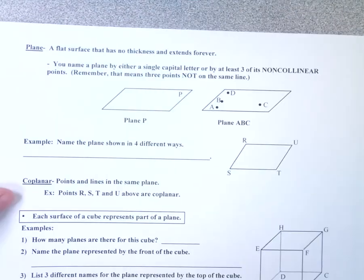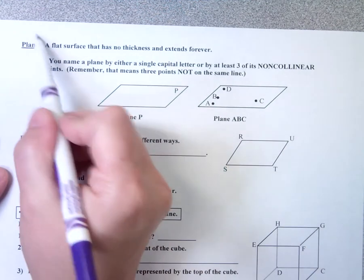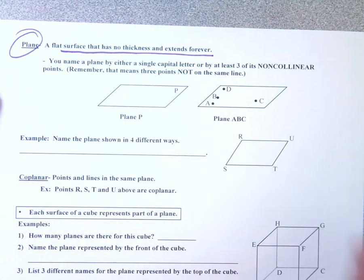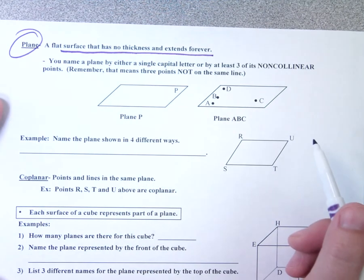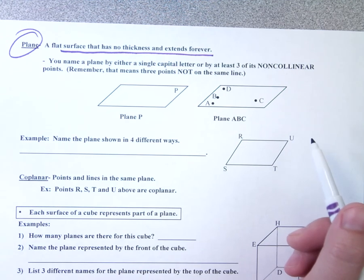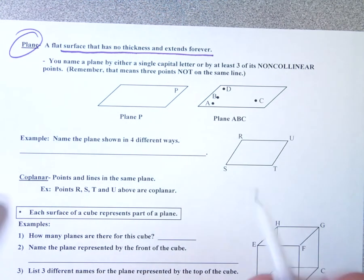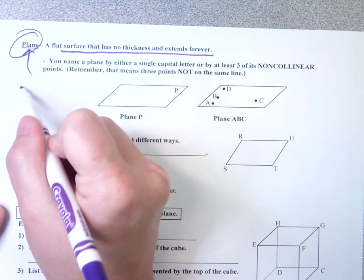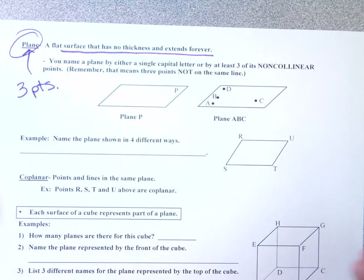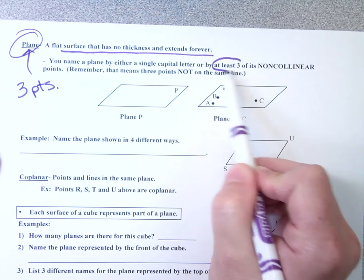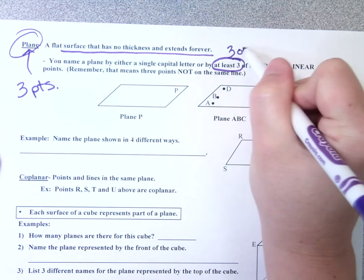Let's move on to naming a plane. A plane is a flat surface that has no thickness and extends forever. In this class, you can think of a plane as the top of your desk, the whiteboard, or a wall. With a plane, we typically use three points — it has to be at least three, meaning three or more — and those three points have to be non-collinear.